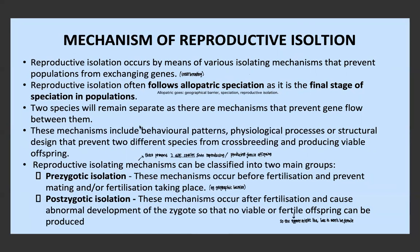These mechanisms could be the actual geographic barrier in allopatric speciation, or they could be behavioural patterns, physiological processes, or structural design — which can occur in both allopatric and sympatric speciation — and which prevent the two species from crossbreeding and producing viable offspring. Reproductively isolating mechanisms can be classified into two main groups: pre-zygotic isolation and post-zygotic isolation.